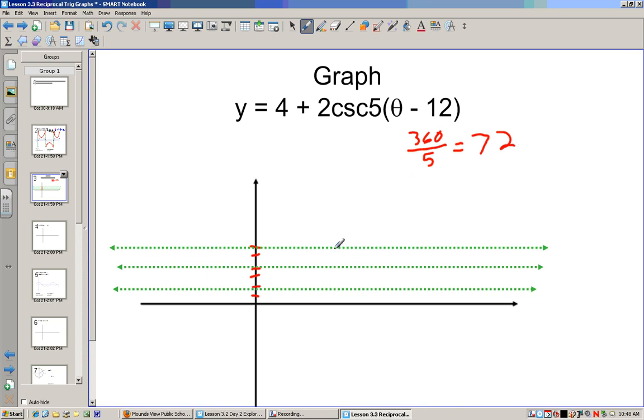Now this 5 is a horizontal shrink by a factor of 5, so the period would be 360 divided by 5, which I believe is 72. Yep. So, and we start 12 to the right. So 12, 24, 36, 48, 60, 72 would be about here.